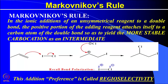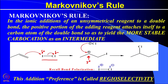This observation leads to a rule called Markovnikov's rule. It states that in the ionic additions of an unsymmetrical reagent to a double bond, the positive portion of the adding reagent attaches itself to the carbon atom of the double bond so as to yield the more stable carbocation as an intermediate. This statement is clearly dependent on the stability of the carbocation. For example, if we are adding ICl, we know that I is δ+ and Cl is δ− in this compound. The positive part attaches to the double bond to generate the more stable 2° carbocation, which then takes up Cl⁻ to form the major product.